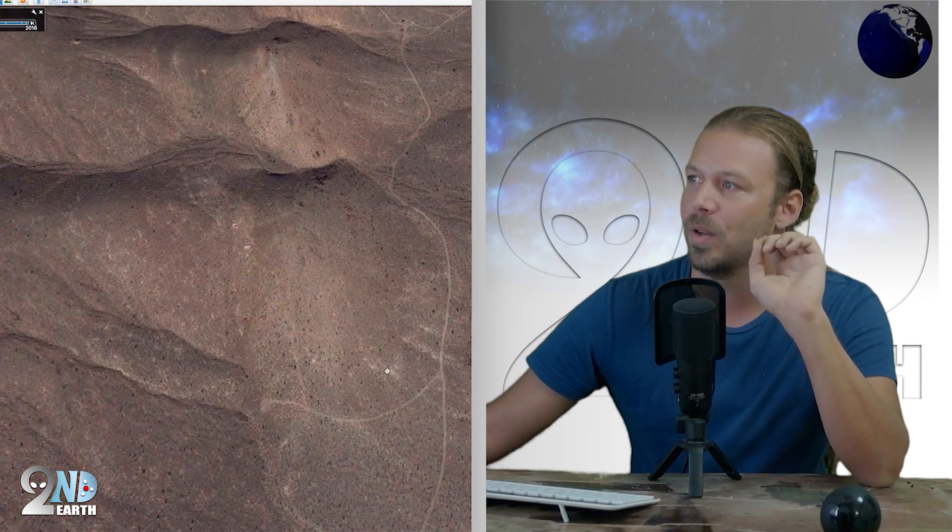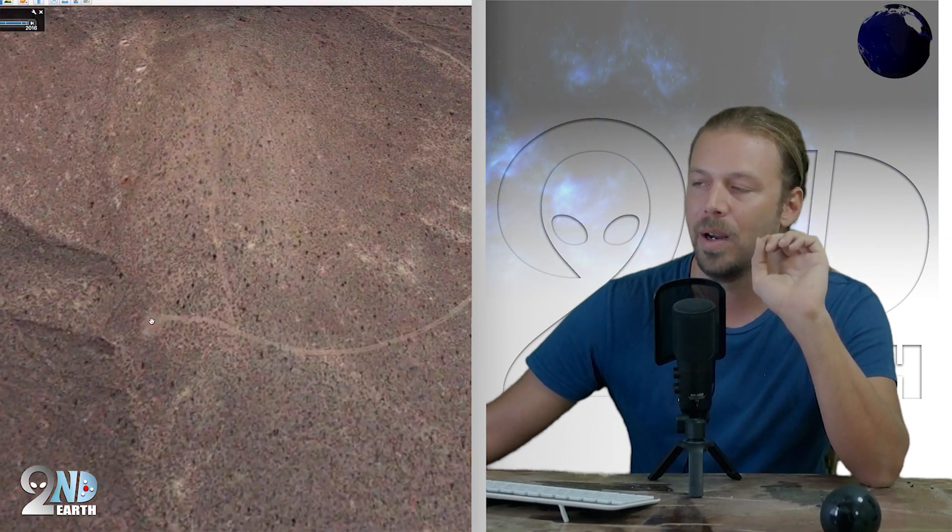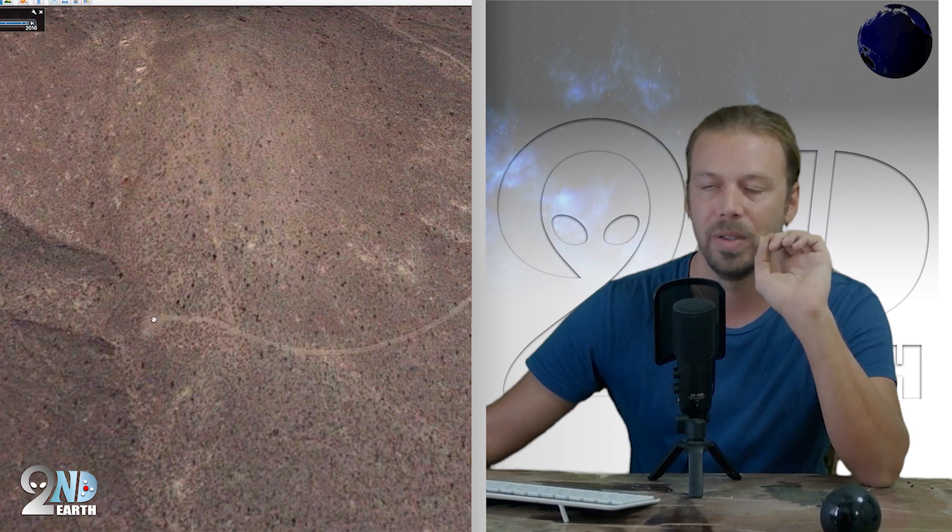And just so you know, these are not roads, these are drainages, water drainages. You can tell because if you look closely, the roads actually have two distinct tire tracks. So if we follow the tire tracks, look what happens.